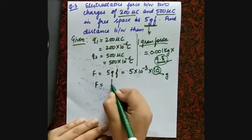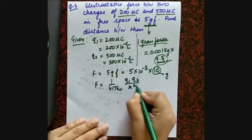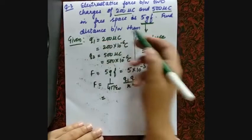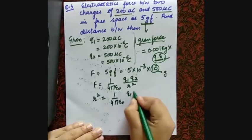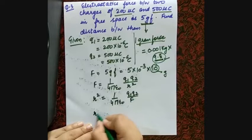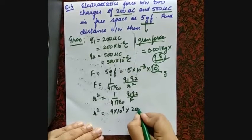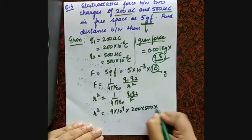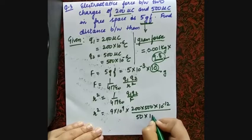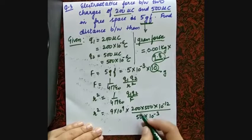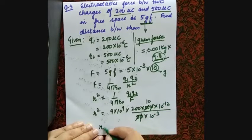Apply the formula: F = (1/4πε₀) × Q1Q2/r². Rearranging to find r: r² = (1/4πε₀) × Q1Q2/F = 9×10⁹ × (200×500×10⁻¹²) / (50×10⁻³). Simplify: zeros and powers cancel step by step.